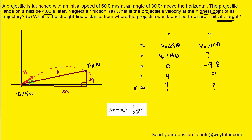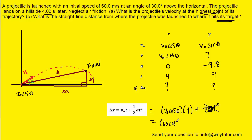To find Δx, we use the kinematic displacement equation. For the x direction: Δx = v₀cosθ · t + ½at². Since acceleration in x is zero, that term drops out. Plugging in v₀ = 60, θ = 30°, and t = 4 seconds, we get roughly 208 meters. We can fill in 208 for Δx on the diagram.